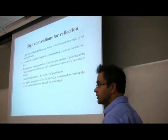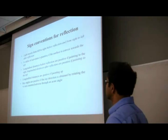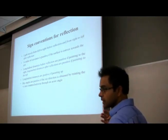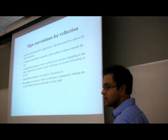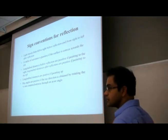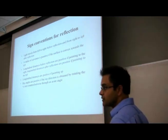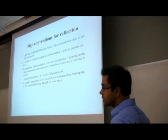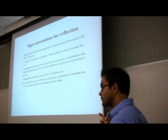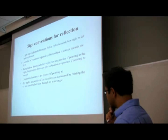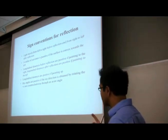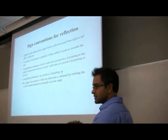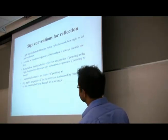The sign conventions for reflection are similar to those for refraction. We assume light travels from left to right before reflection and right to left after reflection. This convention is useful when doing analysis with matrices. Longitudinal distances before reflection are positive pointing to the right — if you're measuring distances transverse to the optical axis, a positive object stands up and is negative standing down, and after reflection it's reversed.